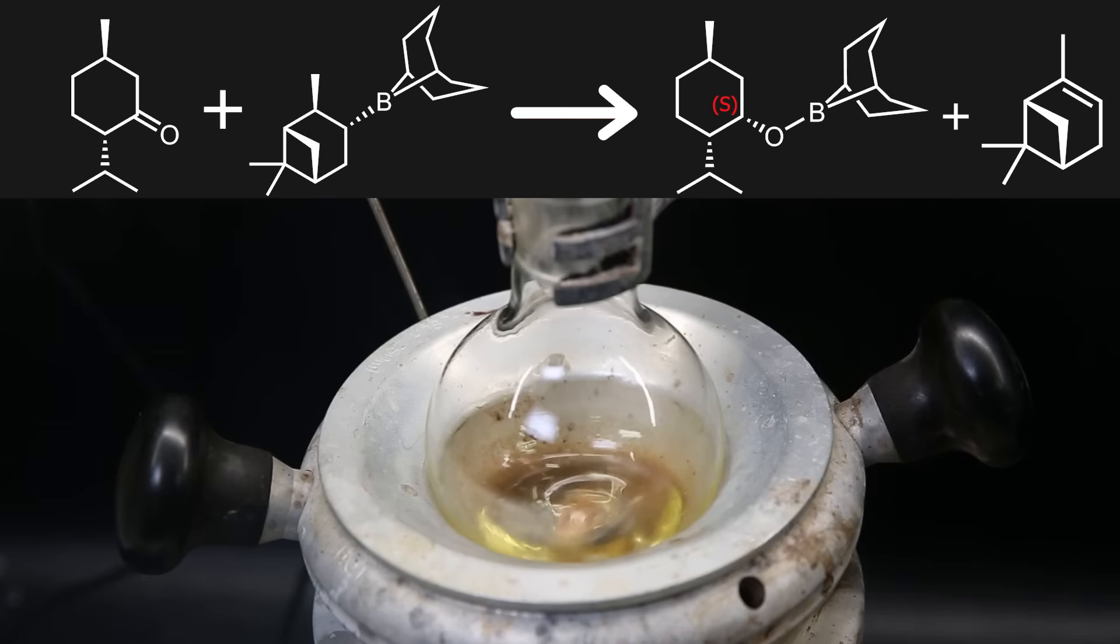In this reaction, the ketone of Levomenthone will react with the Alpine borane, forming an intermediate product where the boron stays attached to the oxygen. This creates a new stereocenter where the S configuration is favored, which in this case is the favored configuration when using 1S-LevoAlphaPinene. The pinene from before is simply regenerated as a side product.